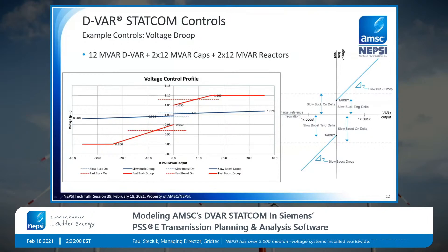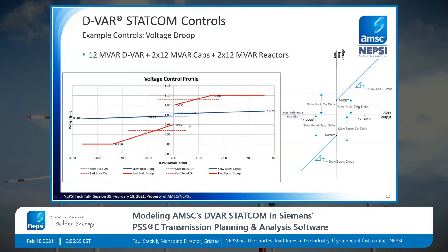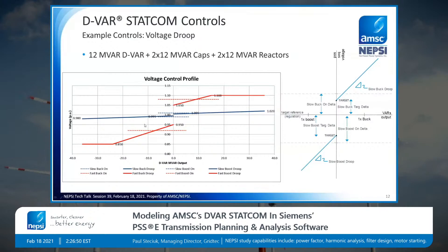If the voltage deviates to extreme events — outside approximately 92% to 108% voltage — the red curves take over. This is where the STATCOM utilizes its overload. If voltage is below 85%, the STATCOM goes to full 3x current output. This concept of dual droop controls — transient and regulation together — is a unique control feature that allows quite a bit of customization and application-specific parameters.